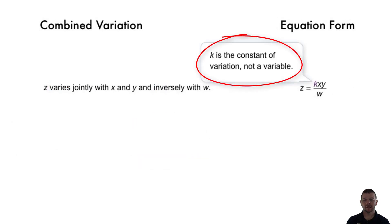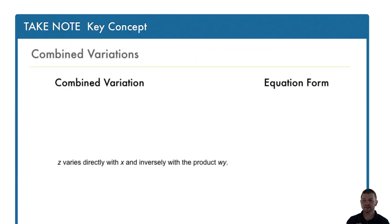Note once more, k is the constant of variation and not a variable. Finally, z varies directly with x and inversely with the product w times y. Its equation form, z equals kx over wy.